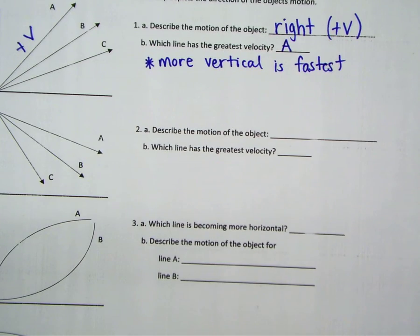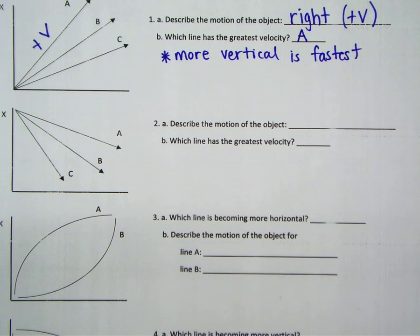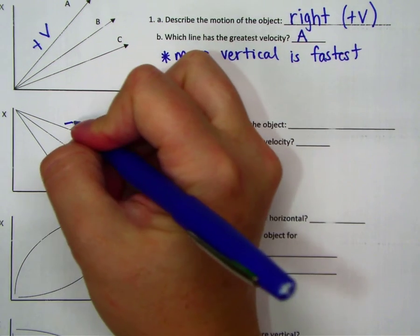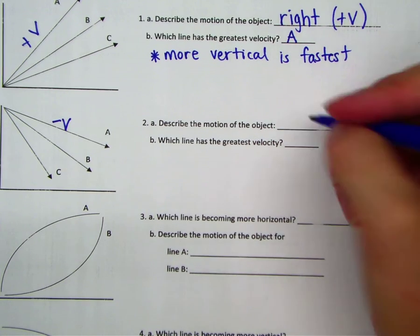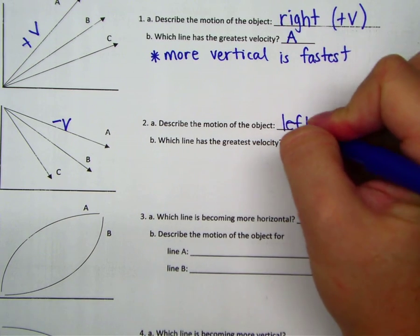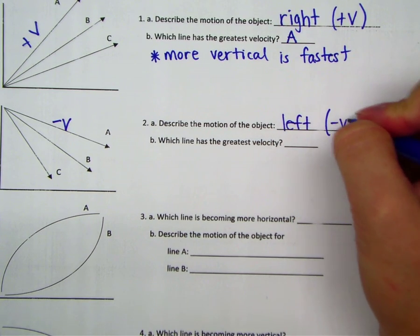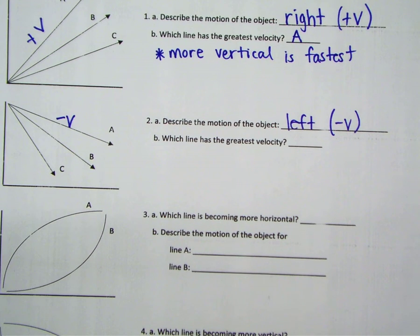Looking at the next graph, we see that the slope is now negative. So we have a negative velocity. When we have a negative velocity, we know the object is moving to the left, or negative, or backward, or the opposite direction that it came from.